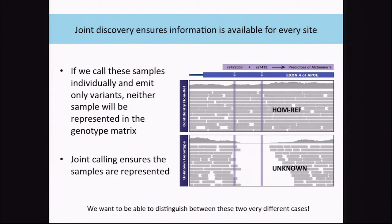Another thing we like to know is whether something is homozygous reference or if we just couldn't make a call because we didn't have enough data. As part of the joint calling pipeline, we're going to be able to record confidences that we actually saw a reference site rather than that we didn't have enough information to make a call. We're going to capture that data and keep it through the end. If we see one site that's variant in some samples, we will know if it wasn't variant in the other samples or if we just didn't have enough information to tell.